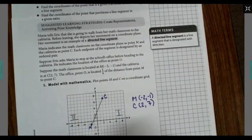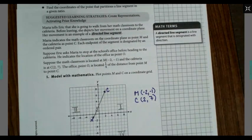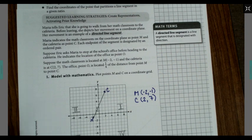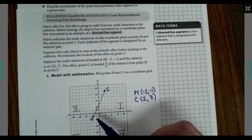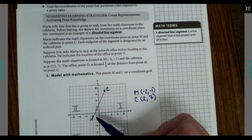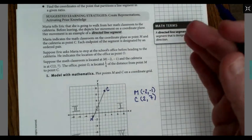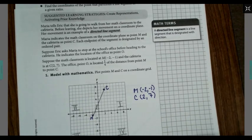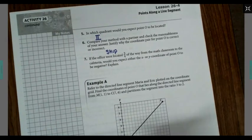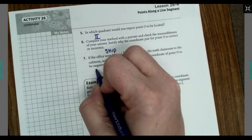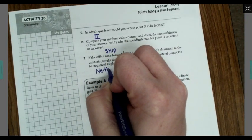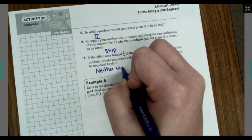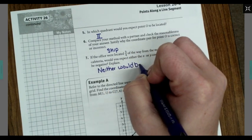If it were three-fourths of the way, would you expect either value to be negative, X or Y? Probably not because we would get more positive. We would keep rising and running over and over again. So, neither would be negative.